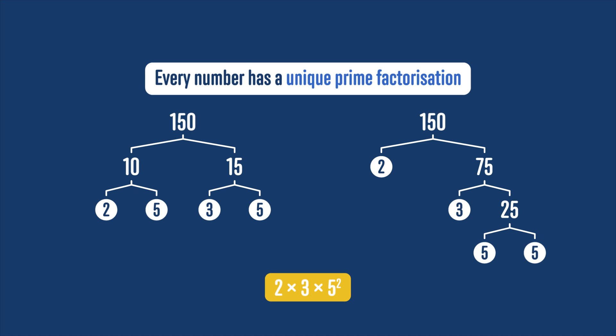So every number has just one prime factorisation, and that prime factorisation reveals everything about the number. If we included 1 as a prime number, that factorisation wouldn't be unique anymore. We could also write 150 equals 2 times 3 times 5 squared times 1, or times 1 squared, or times any other power of 1. So that's the real reason we say 1 isn't prime.